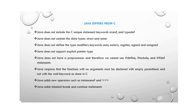Sixth, Java requires that functions with no arguments must be declared with empty parentheses and not with the void keyword as done in C. Seventh, Java adds new operators like instanceof, which C does not have. The last difference is that Java adds labeled break and continue statements, whereas C uses only break and continue. These are the differences between Java and C.